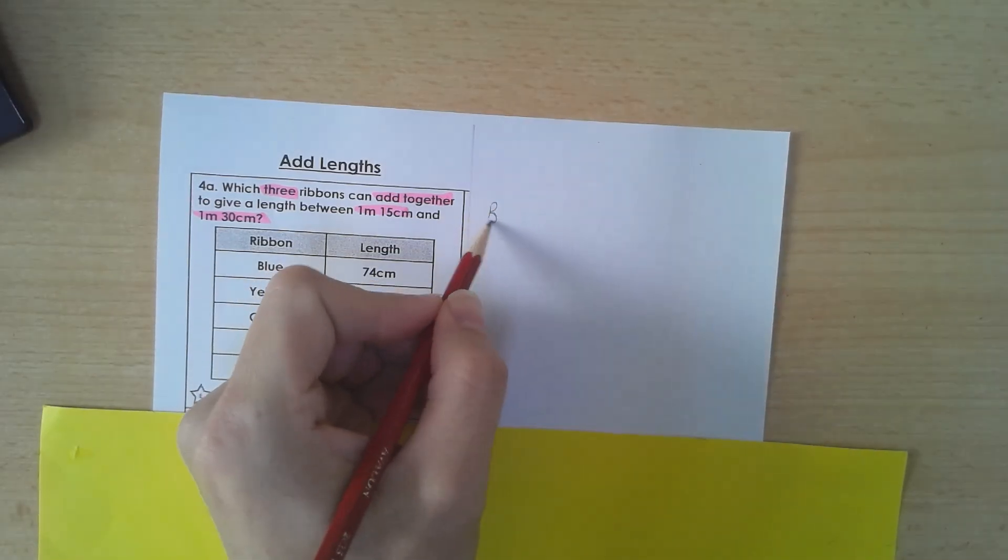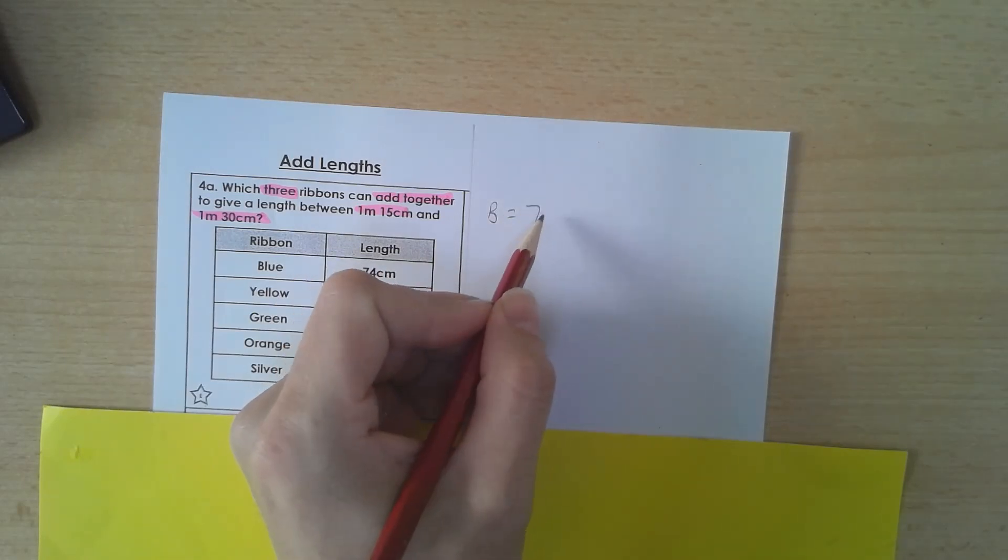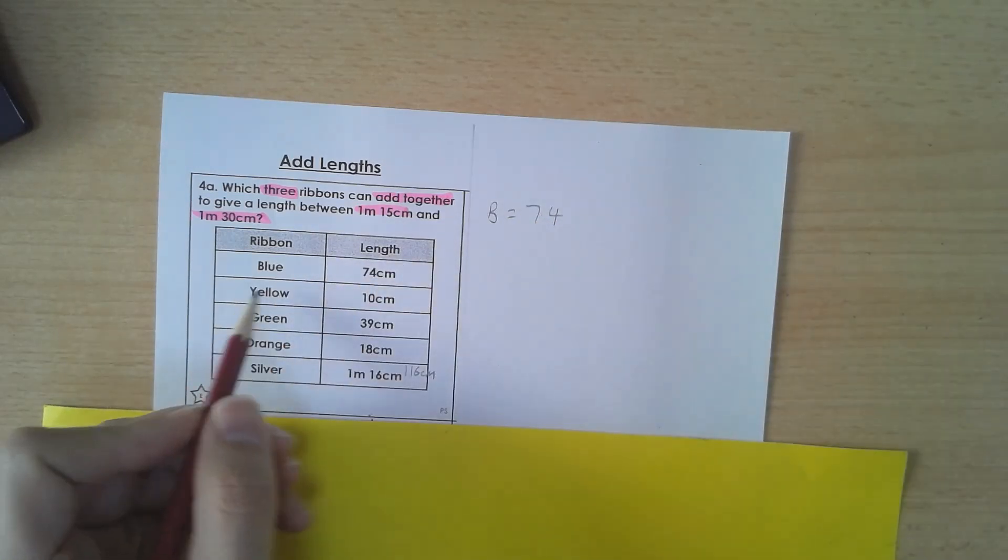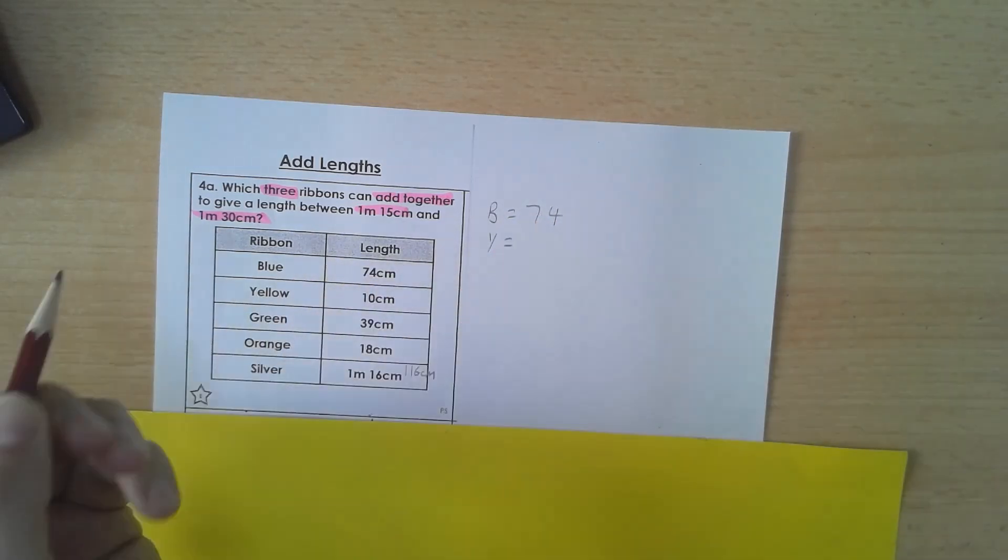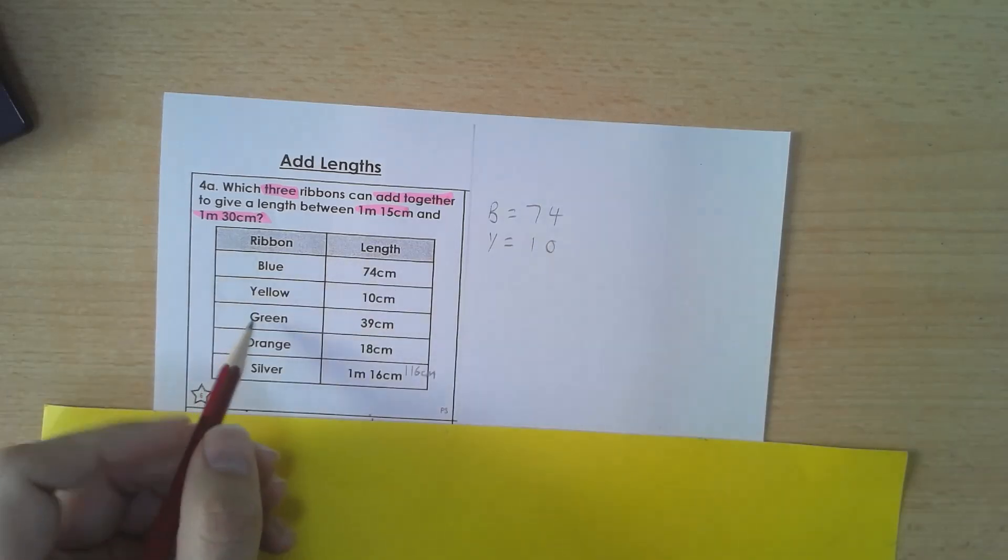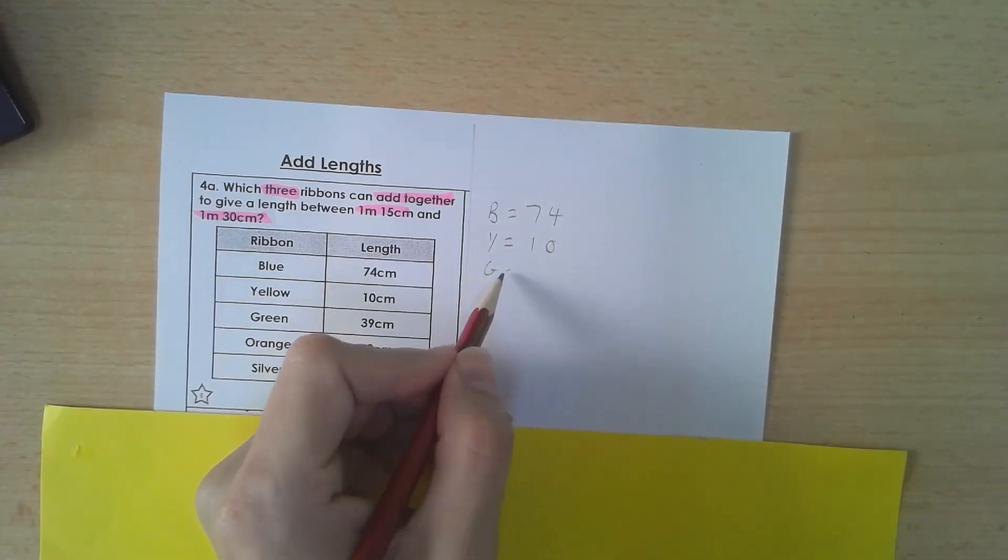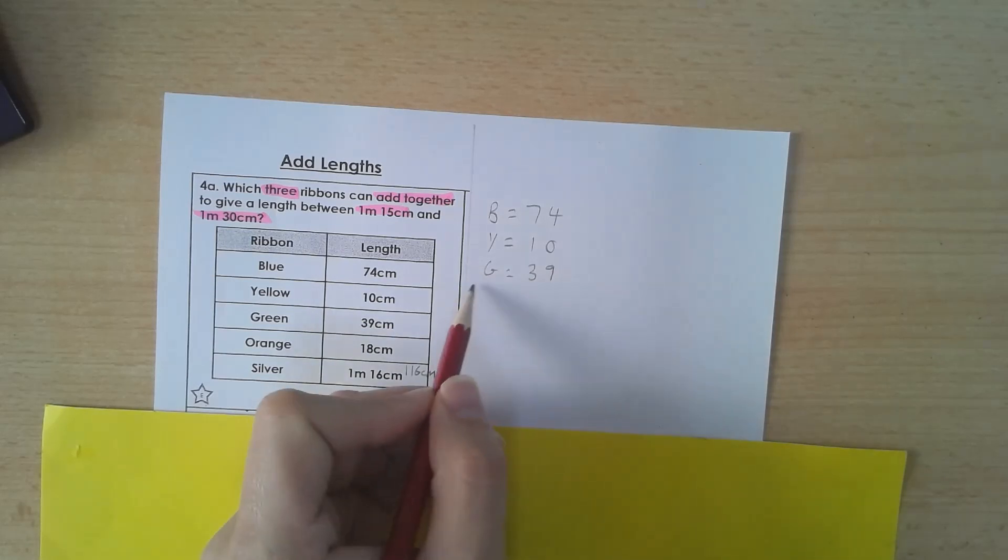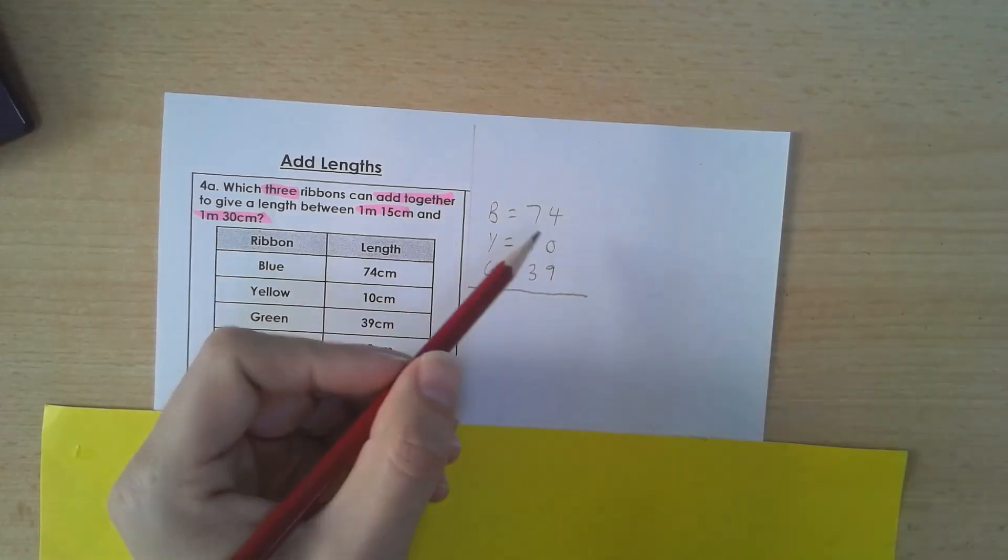So I'm going to take blue, which equals 74. I'm going to take the yellow, which equals 10. And I'm going to take the green, which equals 39. And I'm going to have my little column method here.